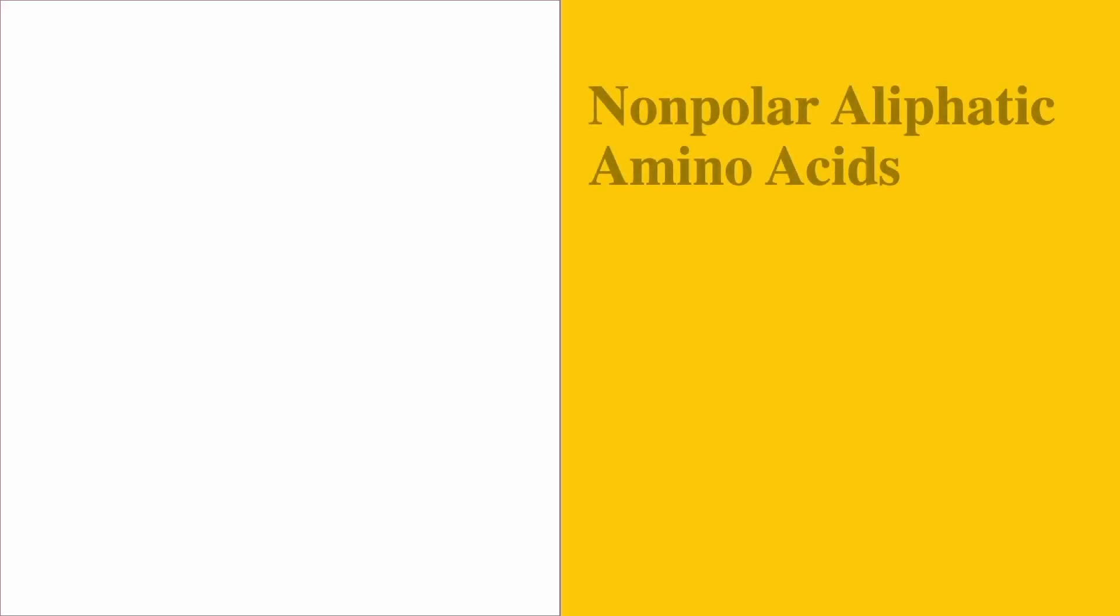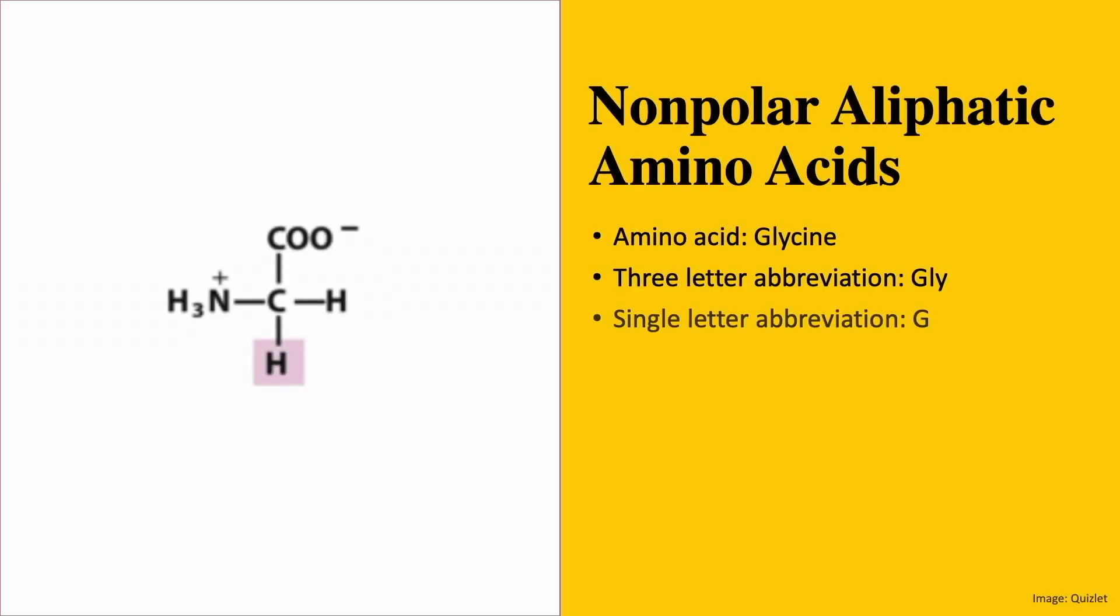First, we have glycine. This is the simplest amino acid. The R group is a simple hydrogen atom. Because of this, glycine is the only amino acid that does not have a chiral center. This would be important for any type of biochem exam. Watch my video on chirality to learn more about chiral molecules.